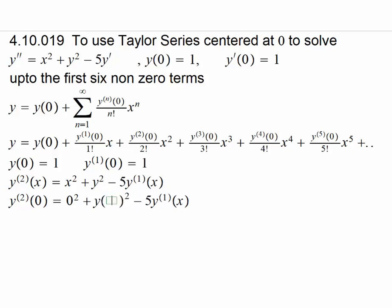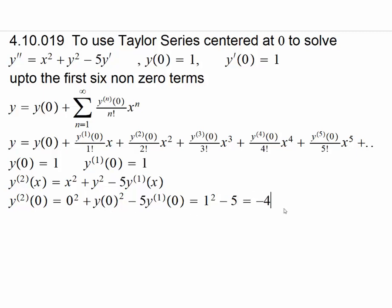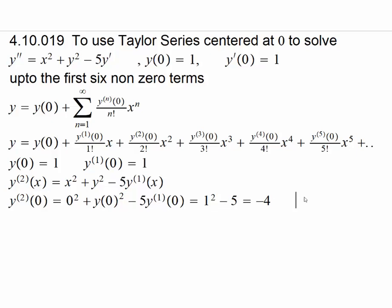Substituting x equals zero into the differential equation, we get the second derivative of y at zero equals y(0) squared minus five times y'(0). Since y(0) is one and y'(0) is one, this gives us one squared minus five times one, so y''(0) equals negative four.